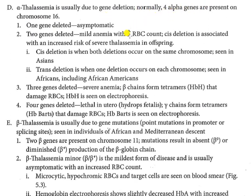If one gene is deleted, it is a silent carrier — mild disease. Two gene deletions give mild anemia. Three gene deletions give severe anemia. Four gene deletions are lethal in utero, causing the baby's death in the uterus. This is called hydrops fetalis.